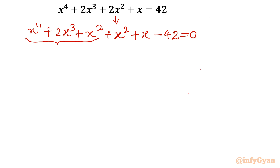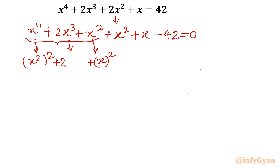Now just see the first three terms of the equation. I can write x⁴ as (x²)², and x² as (x)². Now see the middle term — I can write it as 2 times x² times x. If you notice, this is recalling the standard algebraic identity a² + 2ab + b² = (a + b)².